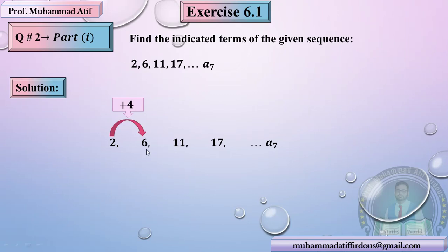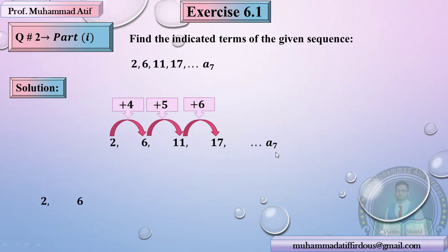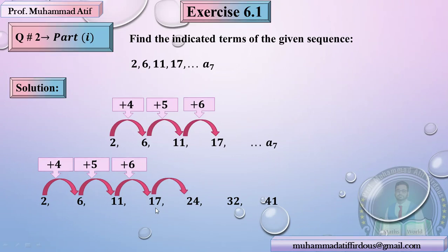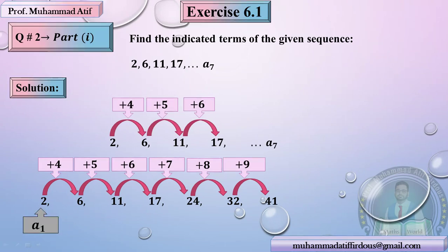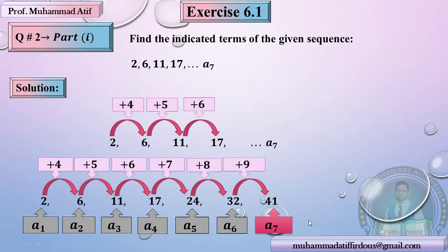So the differences are 4, 5, 6 — increasing by 1. We need the 7th term. After 17, add 7 to get 24, then add 8 to get 32, then add 9 to get 41. The sequence was: 2 (1st), 6 (2nd), 11 (3rd), 17 (4th), 24 (5th), 32 (6th), 41 (7th). So the 7th term of the given sequence is 41. These come in short questions or objective questions — you have to find the pattern.